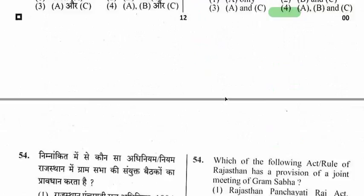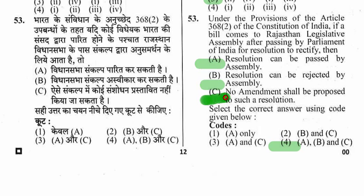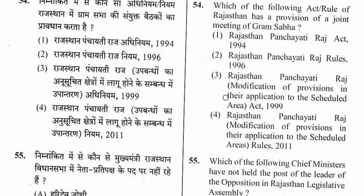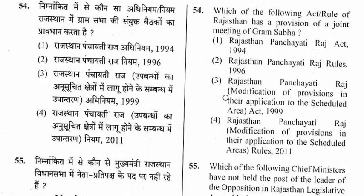Question 54: Which of the following Rajasthan acts has a provision for a joint meeting of the Gram Sabha? Options include Rajasthan Panchayati Raj Act 1994, Rules 1996, modification of provisions for Scheduled Areas Act 1999, and modification of provisions Rules 2011. The right option is the fourth one — Rajasthan Panchayati Raj Modification of Provisions in their Application to the Scheduled Areas Rules 2011.